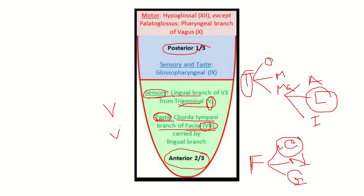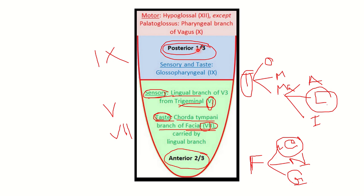So the general sensation is by cranial nerve five and taste is by cranial nerve seven — that completes the anterior two-thirds. For the posterior one-third, both the sensory and taste sensation are received by the glossopharyngeal nerve, which is the ninth cranial nerve.